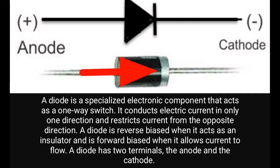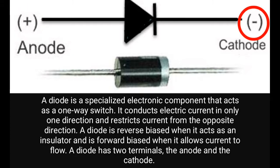A diode is reverse biased when it acts as an insulator and is forward biased when it allows current to flow. A diode has two terminals: the anode and the cathode.